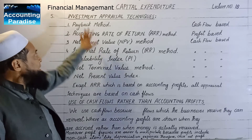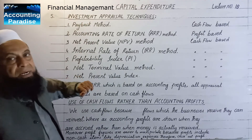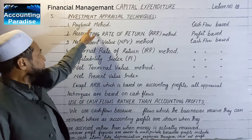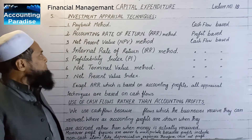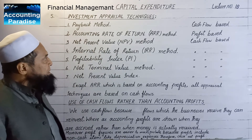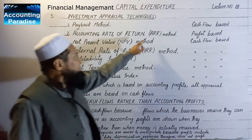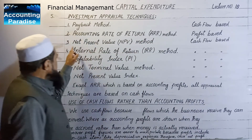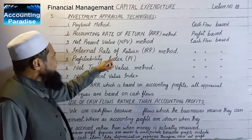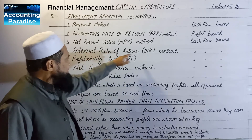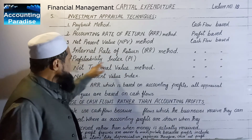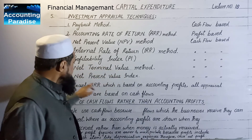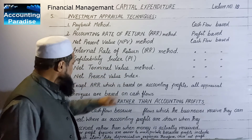Here is a list of investment appraisal techniques: number one, payback method; second, the accounting rate of return, also known as the ARR method; third, net present value method; fourth, internal rate of return method; fifth, profitability index; and sixth, net terminal value method.